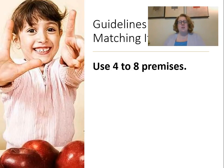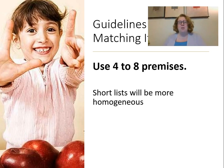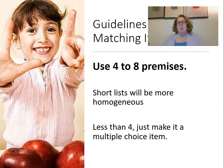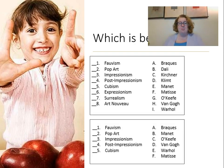The next guideline: use four to eight premises. If you have fewer than four premises, you should just make it a multiple choice item rather than a matching item. If you have more than eight, you should break it up into two matching items. When you have too many, it becomes too long and too confusing. Having tried to answer a matching item with 20 different choices — it was just too long and made it really difficult. It was tricky rather than genuinely difficult to answer.